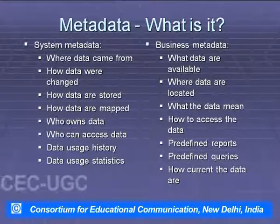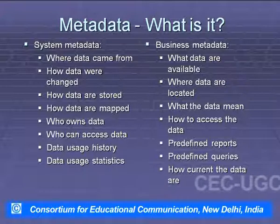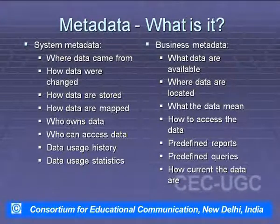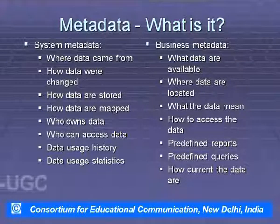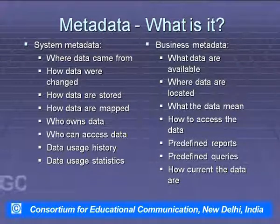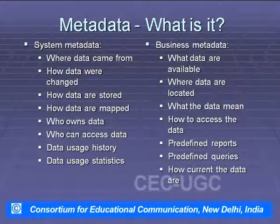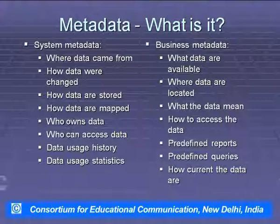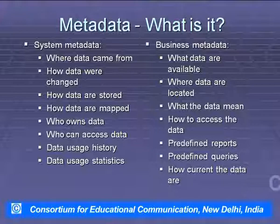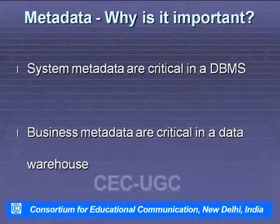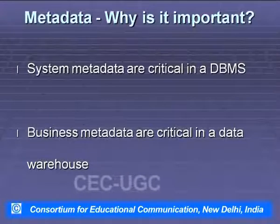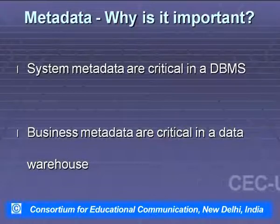What is metadata? System metadata includes: where data come from, how data were changed, how data are stored, how data are mapped, who owns data, who can access data, data usage history, and data usage statistics. Business metadata includes: what data are available, where data are located, what the data mean, how to access the data, predefined reports, predefined queries, and how current the data are. System metadata are critical in a DBMS, whereas business metadata are critical in a data warehouse.